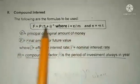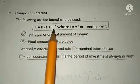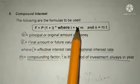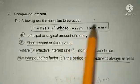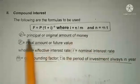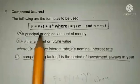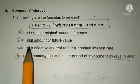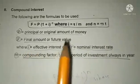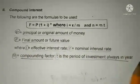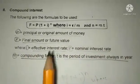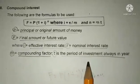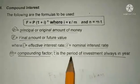For compound interest, the following formulas are to be used: F = P(1 + i)^N, where i = R/M and N = M × T. P is principal or the original amount of money, F is the final amount or future value, i is the effective interest rate, R is the nominal interest rate, M is the compound factor, and T is the period of investment always expressed in years.